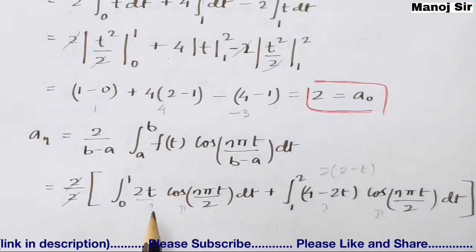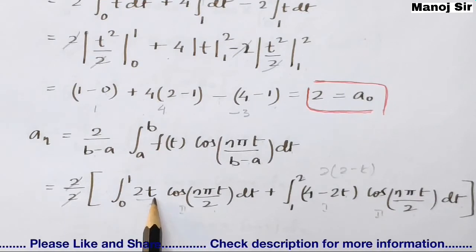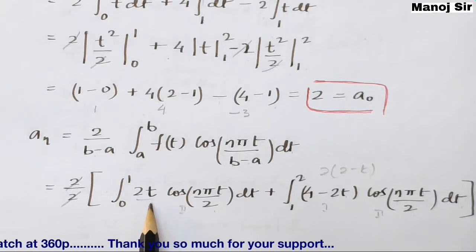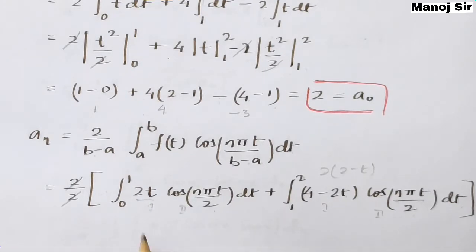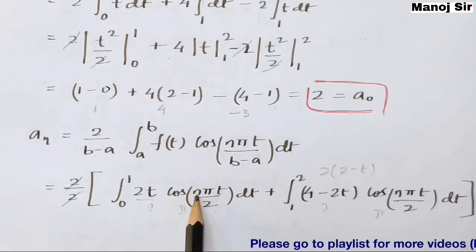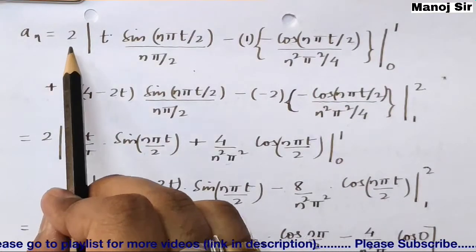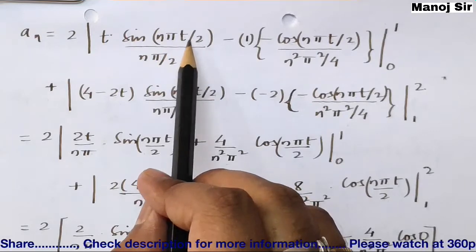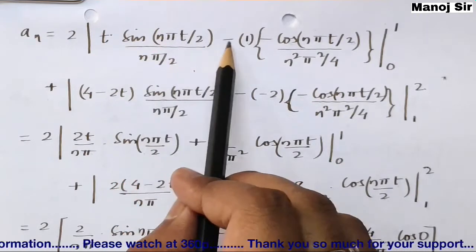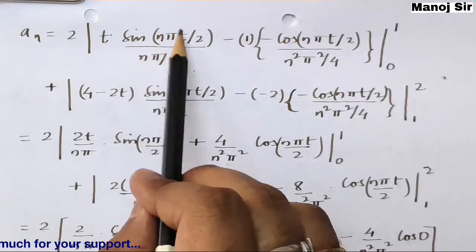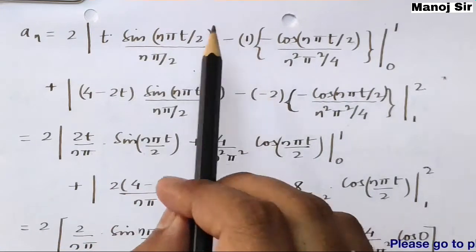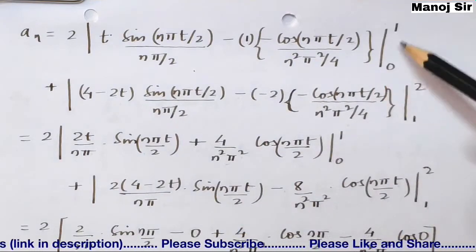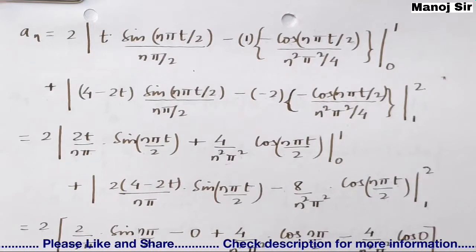We solve each integral using the ILATE rule (integration by parts). In the first part, 2 and 2 cancel. Taking t as the first function and cos(nπt/2) as the second function: first function as-is times integral of second function, minus differentiation of first times integral of second. Integration of cos(nπt/2) gives sin(nπt/2) divided by nπ/2. Then minus 1 times [−cos(nπt/2) / (nπ/2)²], limit from 0 to 1.